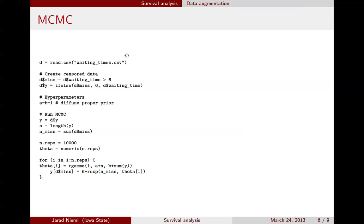Here's the code to implement this. We start with the actual waiting times dataset and censor it by marking any waiting time greater than 6 as missing. The data at that point is just 6 for everybody who is missing, and the true value for everybody else. We assume a proper prior with hyperparameter values of 1 and 1 to keep it diffuse. Then we run the MCMC, alternating between sampling theta given all the data y, and imputing missing values using the memoryless property trick to get a truncated exponential.